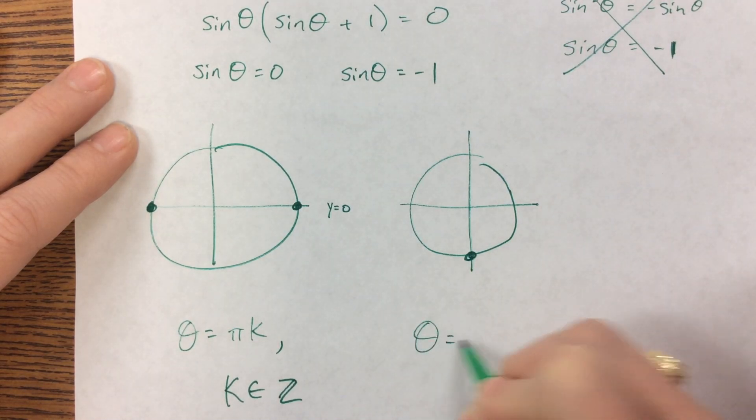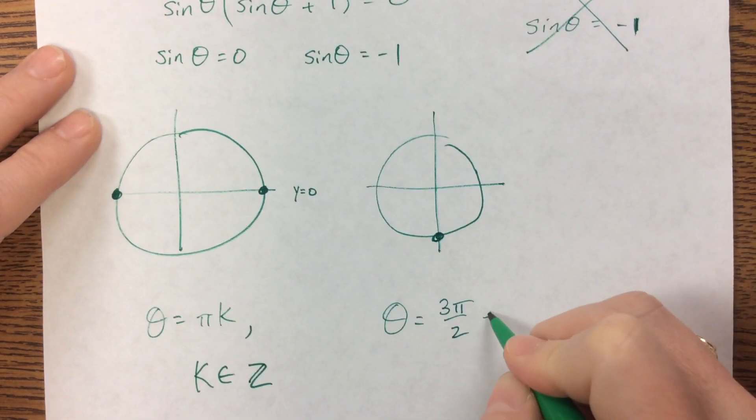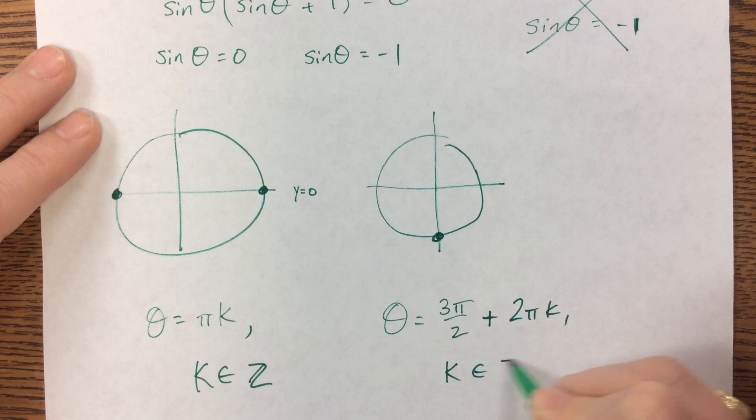And so that one will say that theta is equal to three pi over two plus two pi k, where k is an element of the integers.